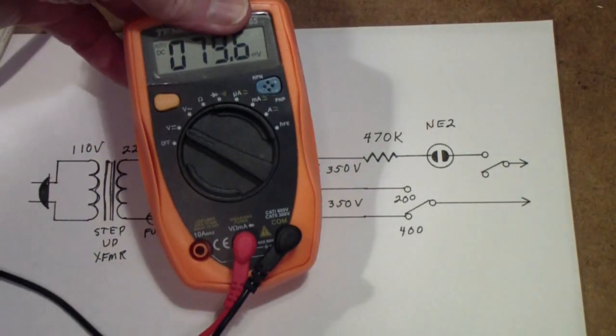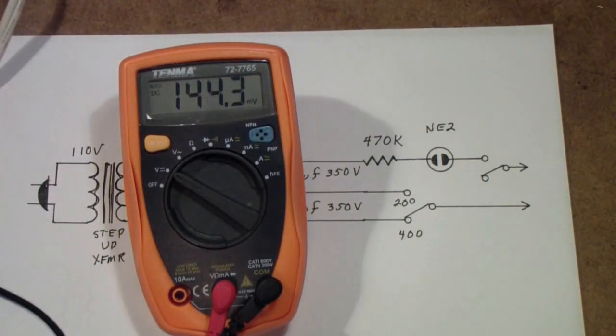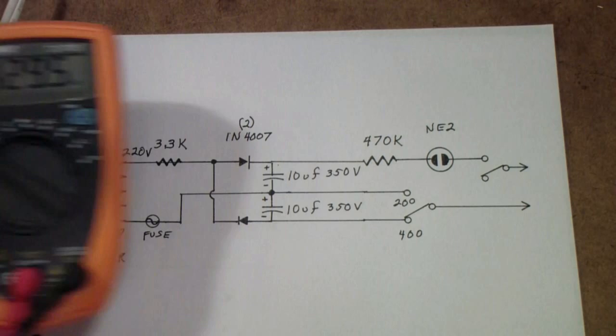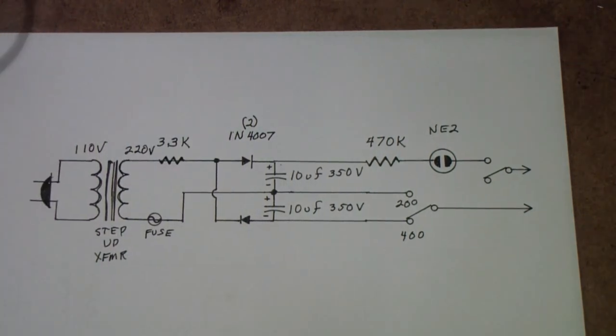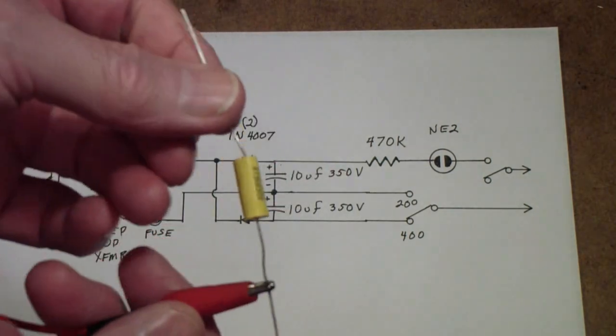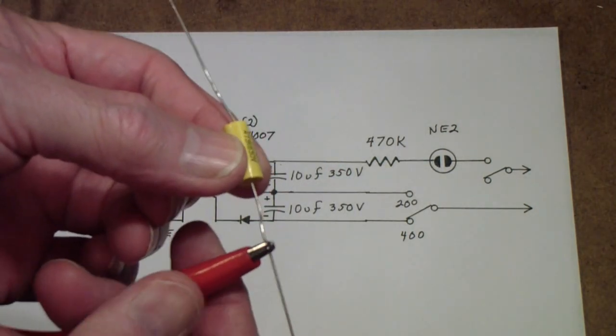Most modern multimeters only have anywhere from 3 volts to 9 volts of total battery voltage. So there's no way they will test capacitors like this yellow capacitor I was testing earlier with a 630 volt rating.